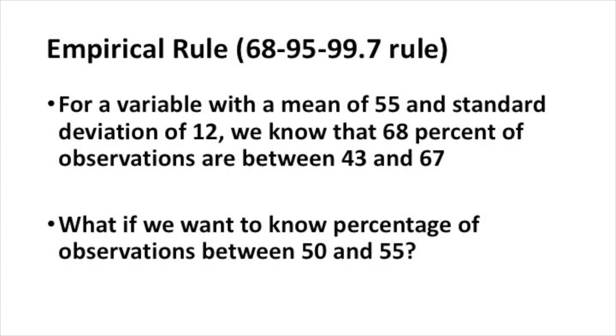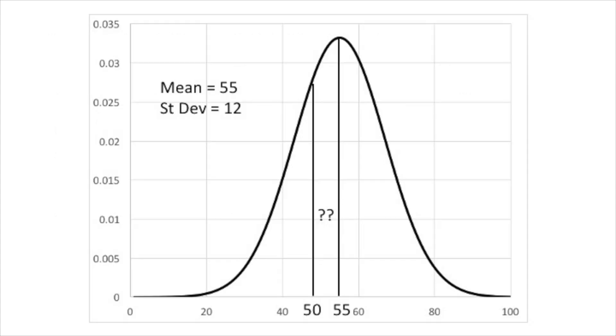But what if we want to know the percentage of observations between 50 and 55? We have our normal distribution with a mean of 55, and we really can't use the empirical rule to tell us the percentage of observations that fall between 50 and 55. So there must be some other approach.